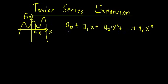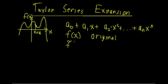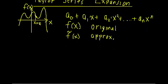To get the notation straight: f of x is our original function — the one that's messy and unwieldy. And f-tilde of x is going to be our Taylor series expansion, our Taylor series approximation.